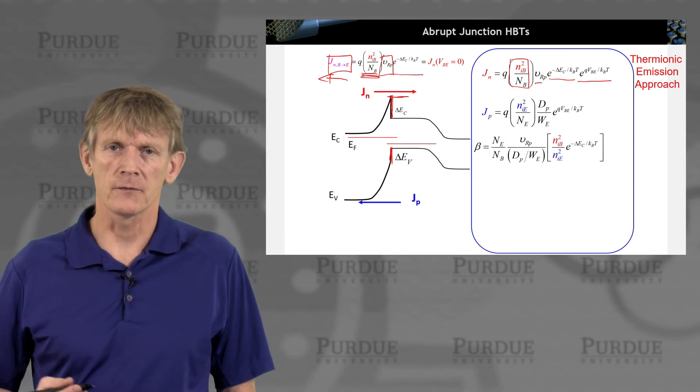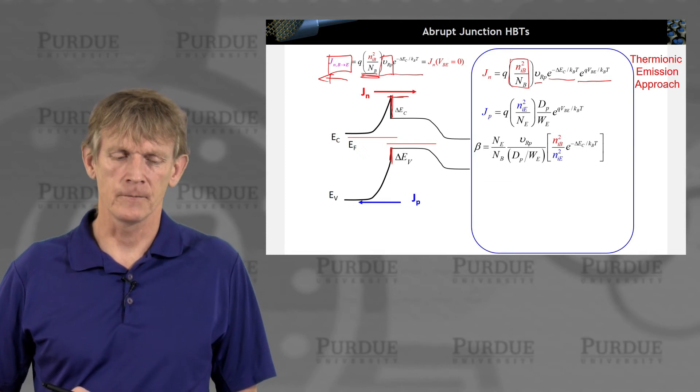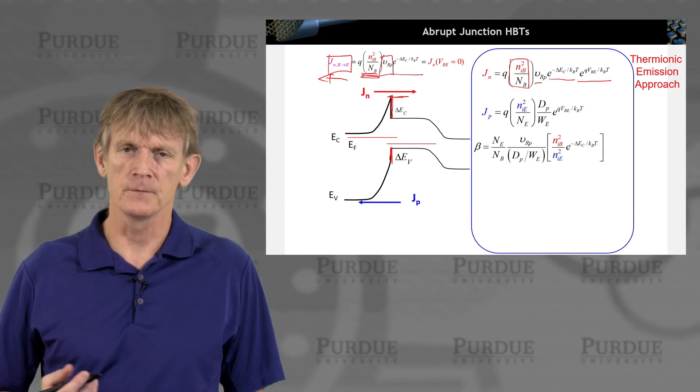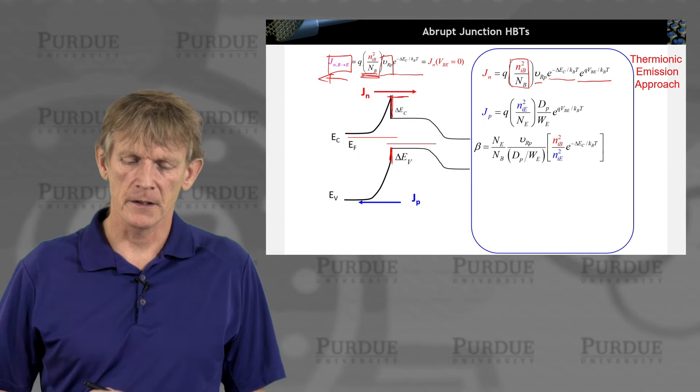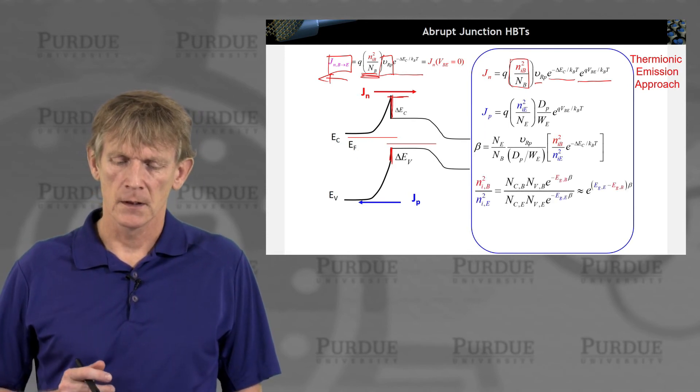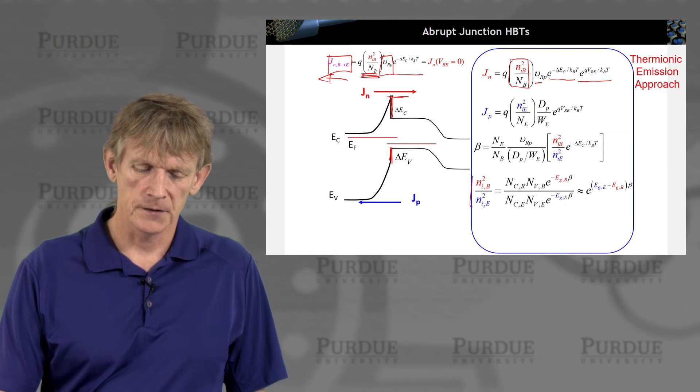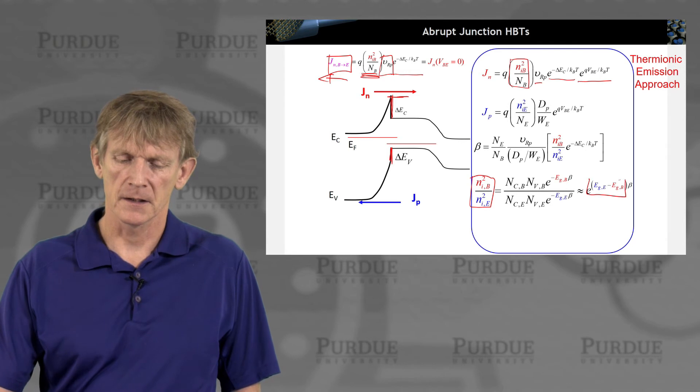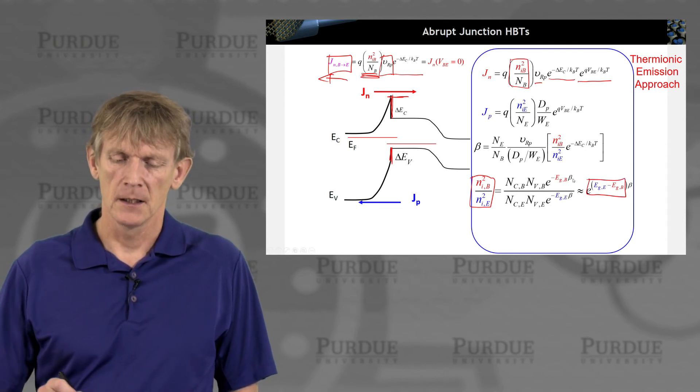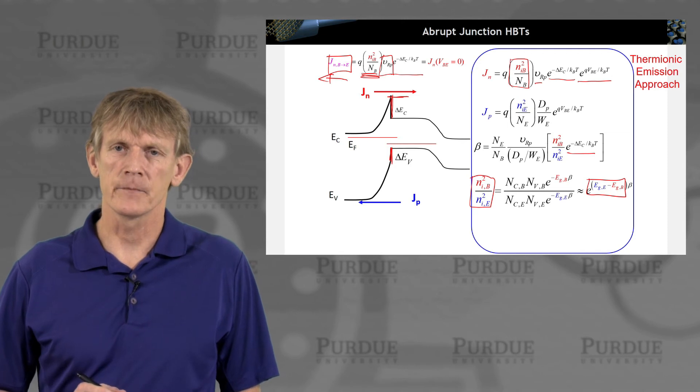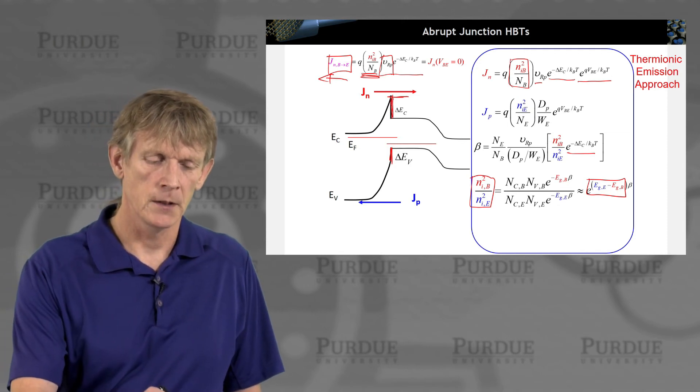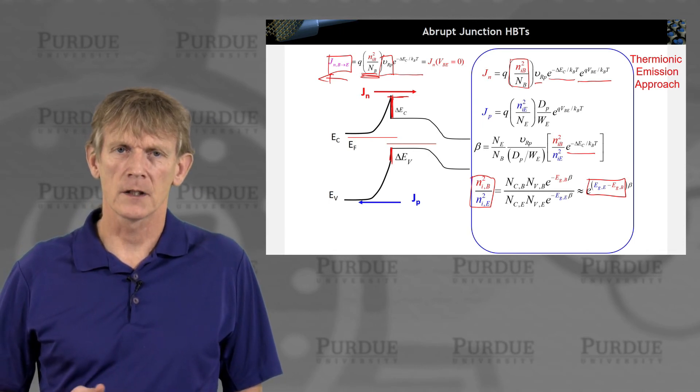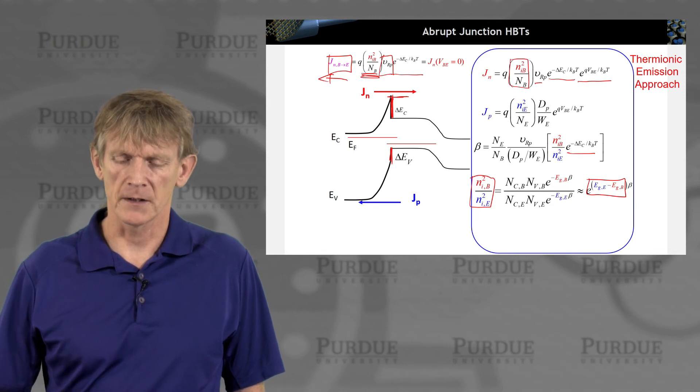We can calculate beta from that if we take the electron and hole current flowing like this, and we have the ratio between these two. What we see is we have this term Nib squared over Nie squared, which has the gap in it. But we also have this expression delta EC in it, which stems from the reduction of flow where electrons have to overcome this conduction band edge.